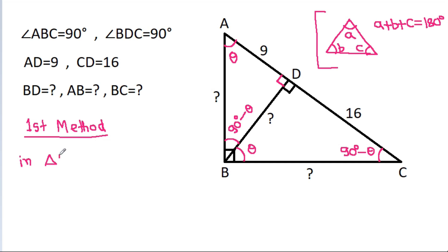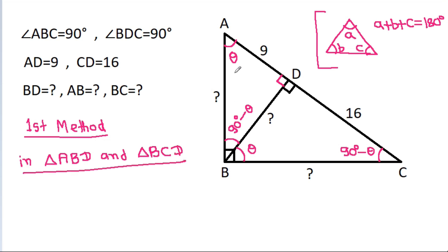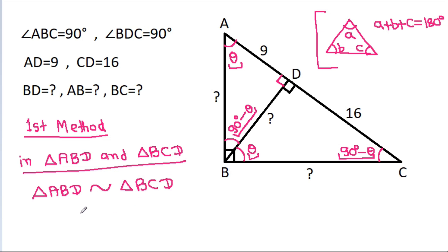In triangle ABD and triangle BCD, angle theta is equal and 90 degrees minus theta is equal. So triangle ABD is similar to triangle BCD. Therefore, AD divided by BD equals BD divided by CD.